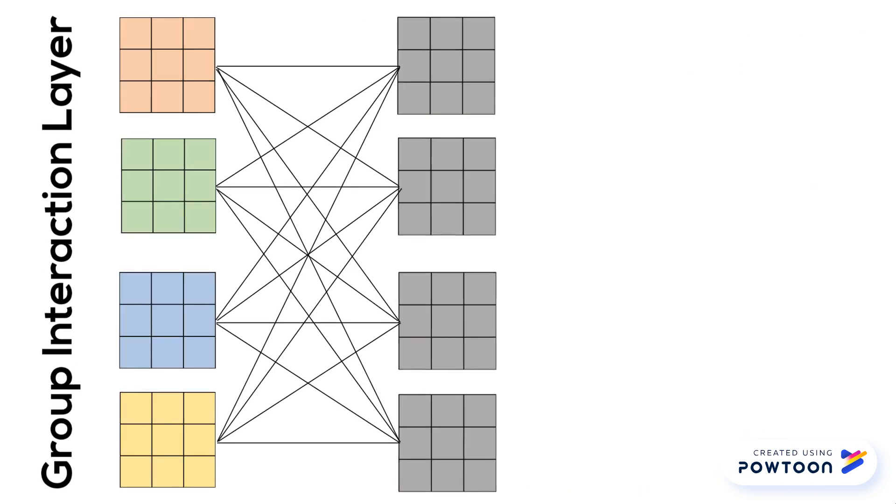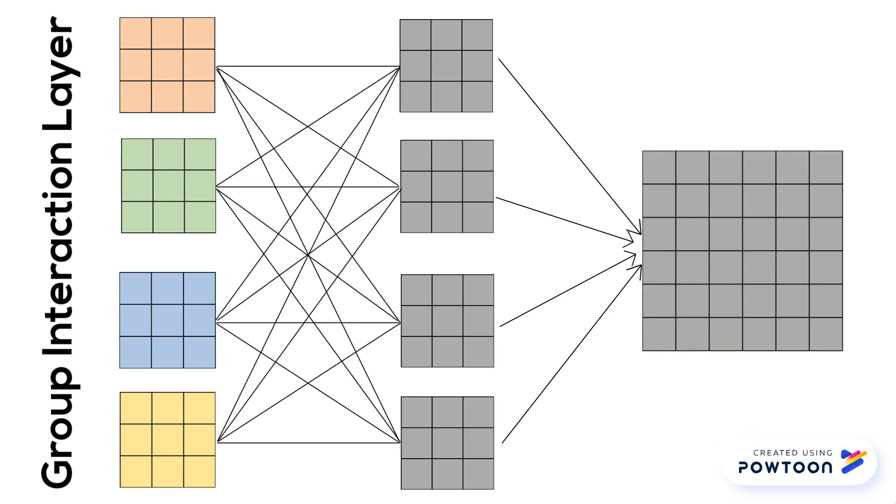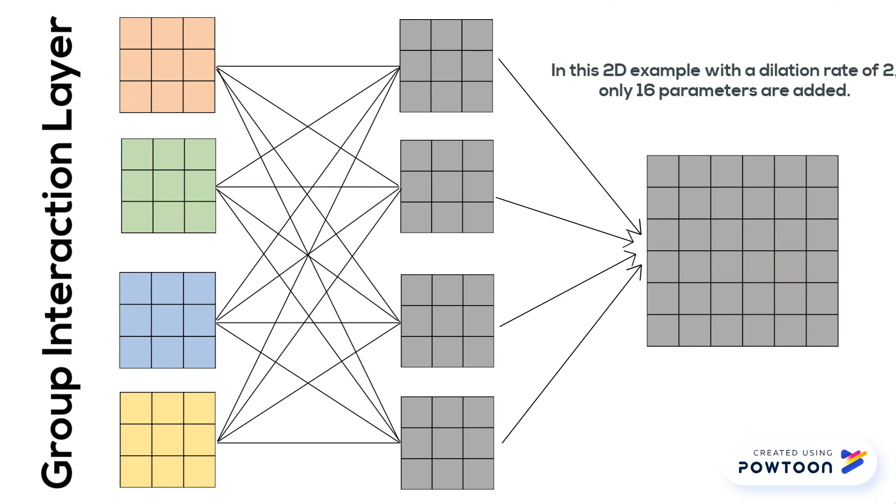Before re-interlacing, groups interact with each other through a fully connected operation. In this example, only 16 extra parameters are added.